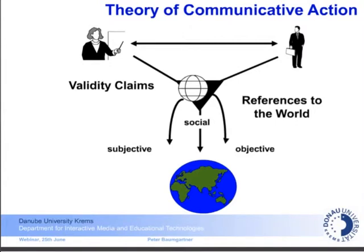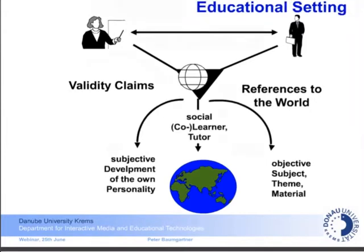So what I wanted to say is that every sentence, every action I'm doing always has these three kinds of orientation to the world — always has three kinds of validity claims. This is important for the learning process as well, whether it's a large learning process or at the microlearning level. We have educational settings with subject, theme, and material — this covers the objective level. But we also have to consider the co-learner — the social side of learning.